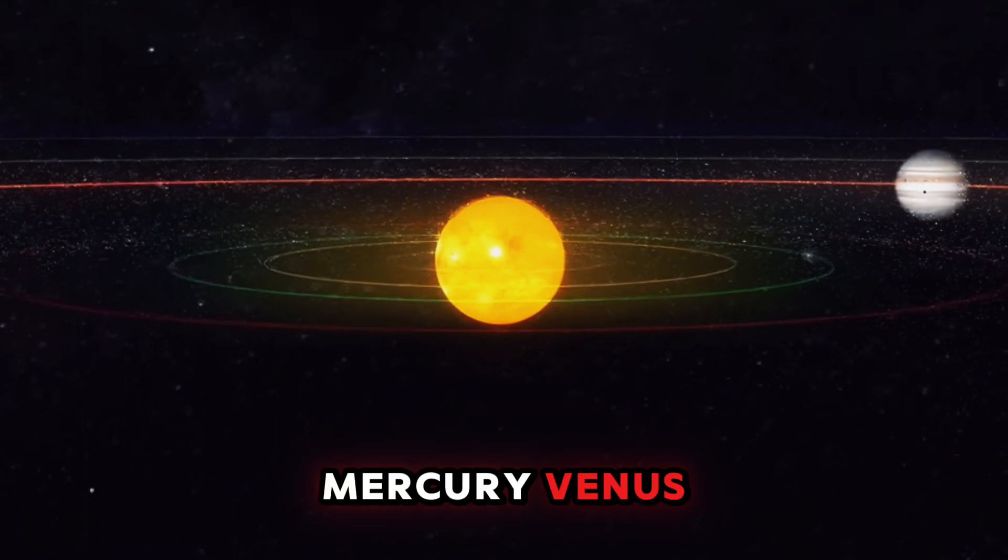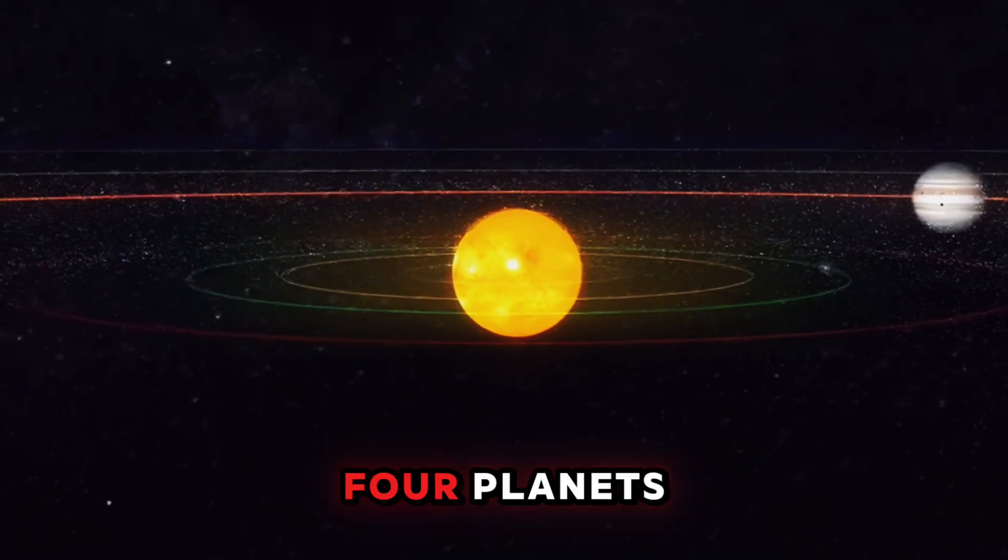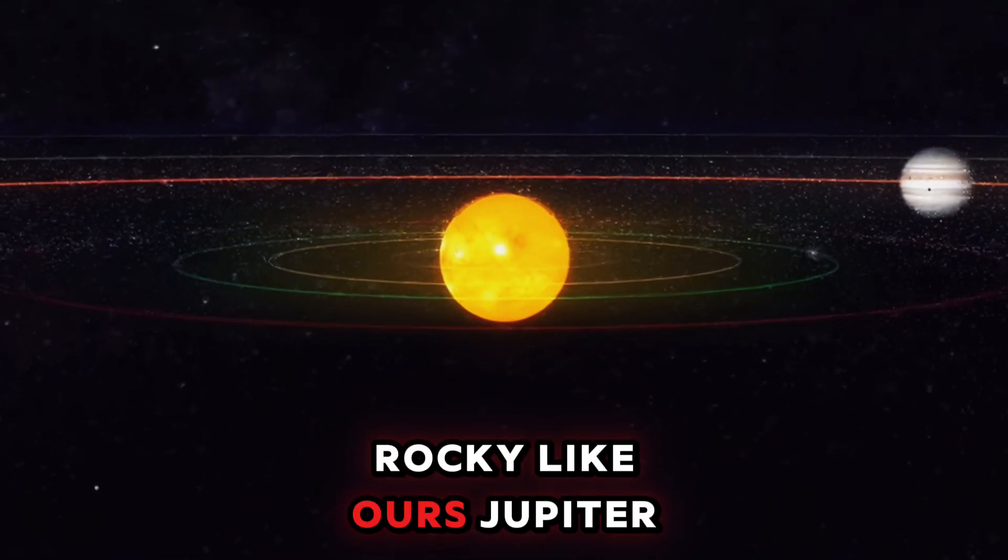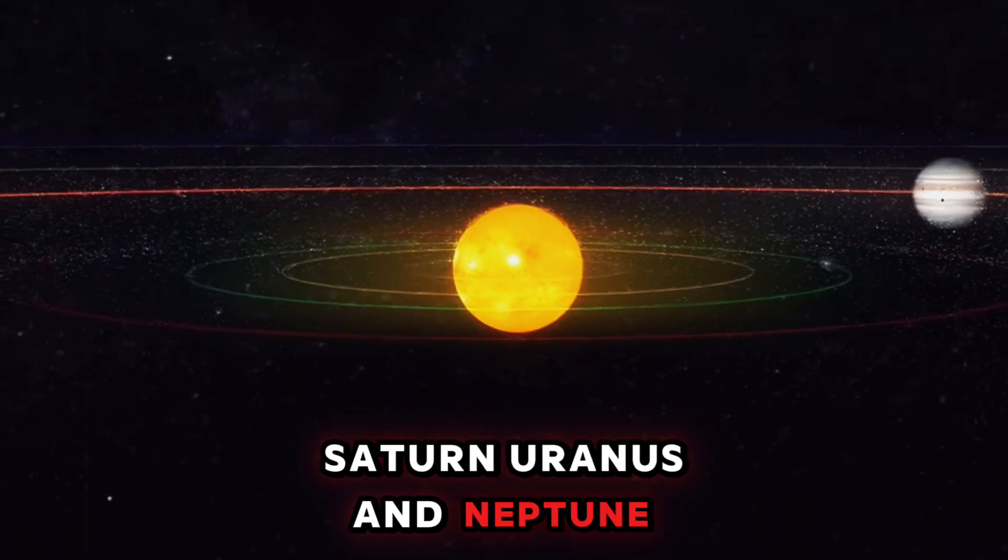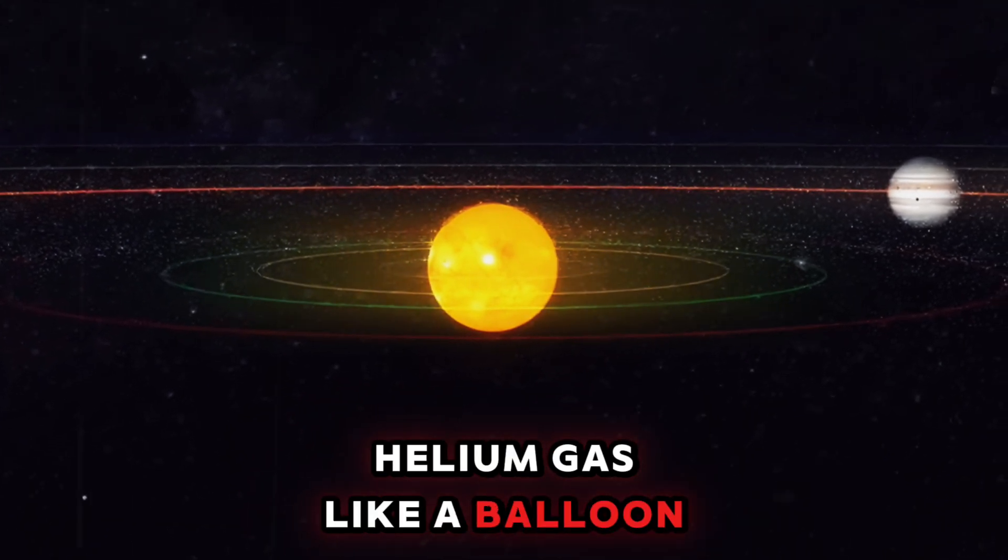Mercury, Venus, Earth, and Mars are the first four planets, rocky like ours. Jupiter, Saturn, Uranus, and Neptune are made of hydrogen and helium gas like a balloon.